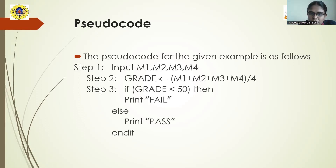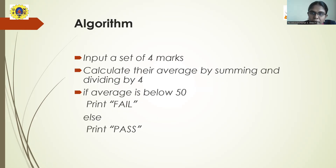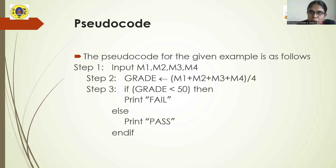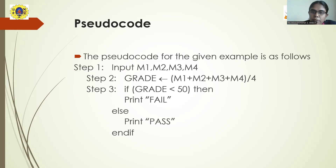In the algorithm, we have written things like 'calculate the average by summing and dividing by four' in a conversational manner. But in pseudocode, you should not write like this. In pseudocode, you should write it as an expression. We are summing the numbers and dividing by four, which gives the average. So: grade = (M1 + M2 + M3 + M4) / 4. Here 'grade' is a variable name — you can use any other variable name. This value will be stored in the variable grade.